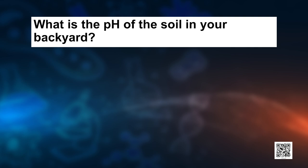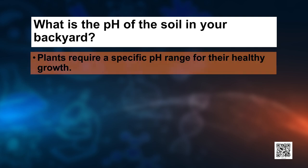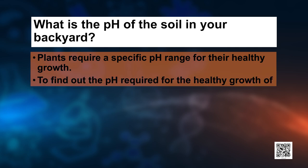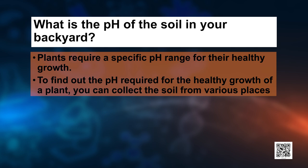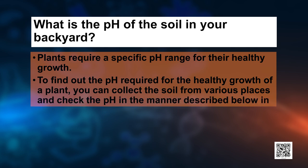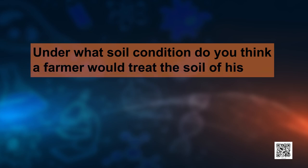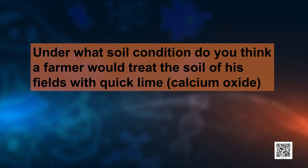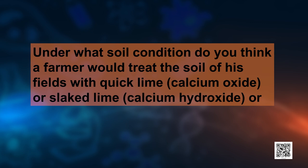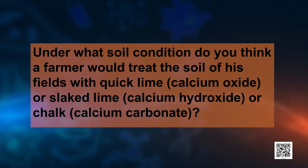You can find the pH of the soil in your backyard. Plants require a specific pH range for their healthy growth. To find out the pH required for healthy growth of a plant, you can collect soil from various places and check the pH — that is the activity for you. Here is a quiz: under what soil conditions do you think a farmer would be treating the soil with quicklime? You know what quicklime is — it is calcium oxide. Or slaked lime, which is calcium hydroxide. Or chalk, that is calcium carbonate. When would a farmer use these to treat the soil?